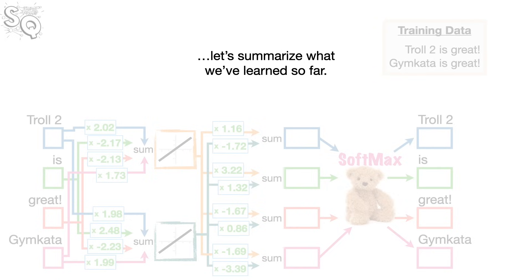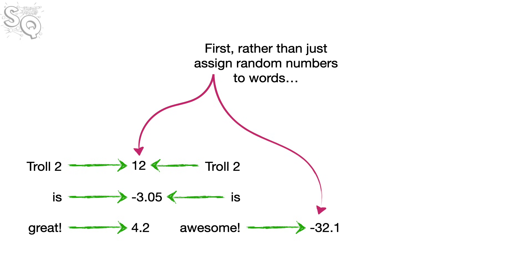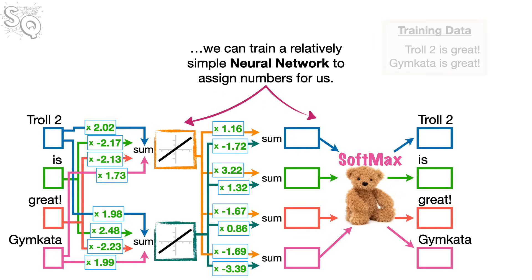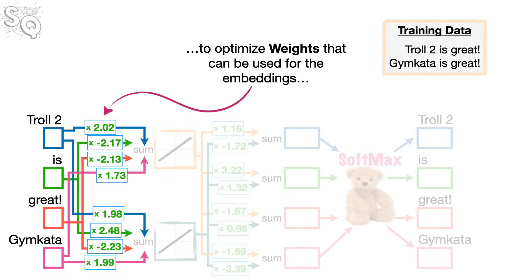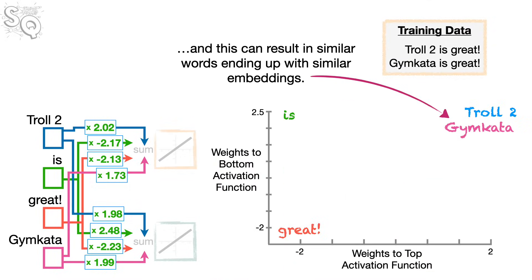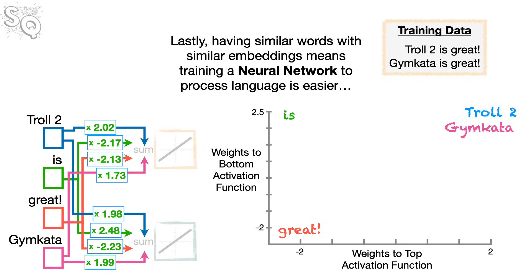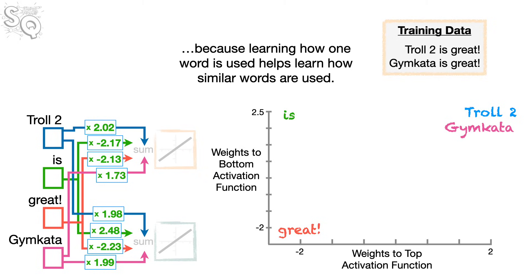Let's summarize: rather than assigning random numbers to words, we train a relatively simple neural network to assign numbers for us. The advantage is that it uses the context of words in the training dataset to optimize weights used as embeddings, resulting in similar words ending up with similar embeddings. Having similar words with similar embeddings means training a neural network to process language is easier, because learning how one word is used helps learn how similar words are used.